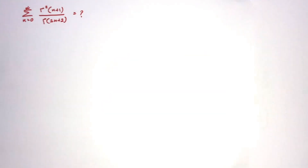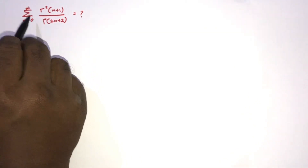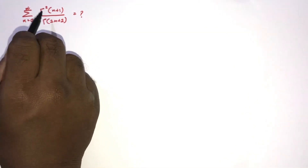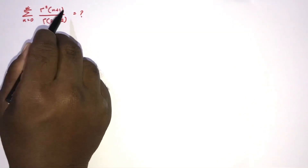Welcome to the mathematics of my channel. In this video, we are going to evaluate this interesting infinite sum: n equals 0 to infinity of gamma squared of (n+1) over gamma of (2n+2).